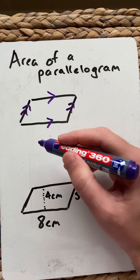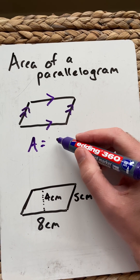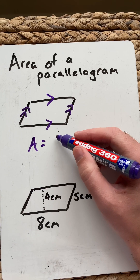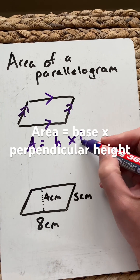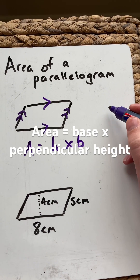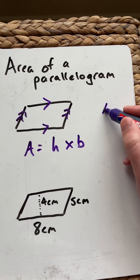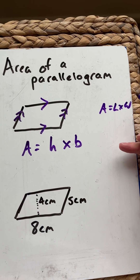The formula for the area is the perpendicular height times the base. Remember, a rectangle area is length times width.